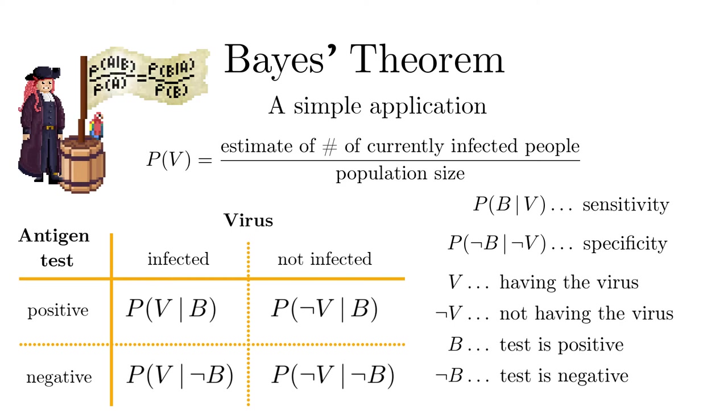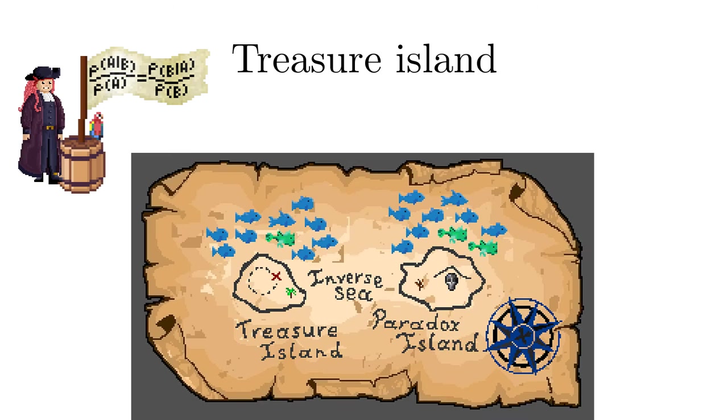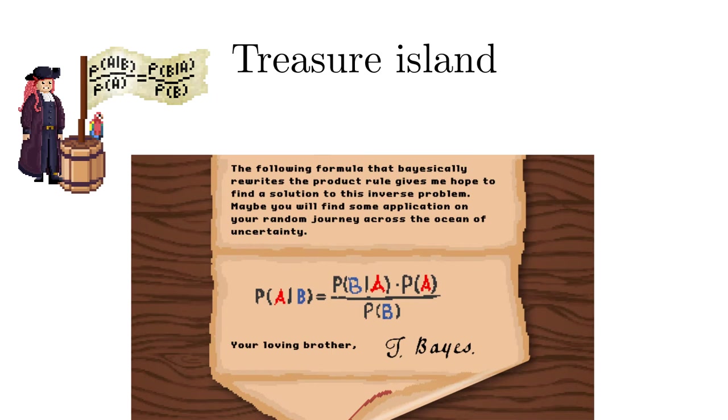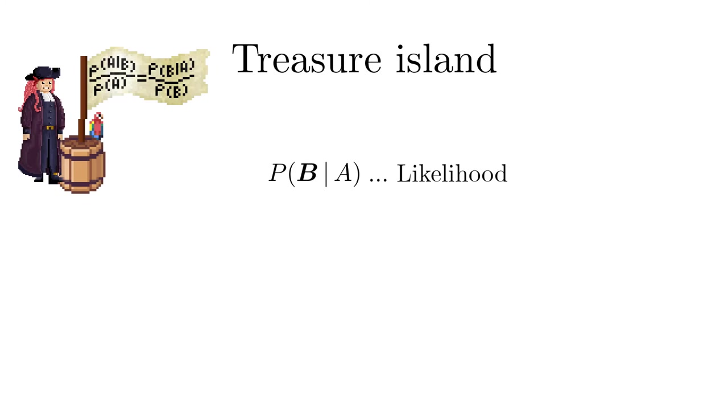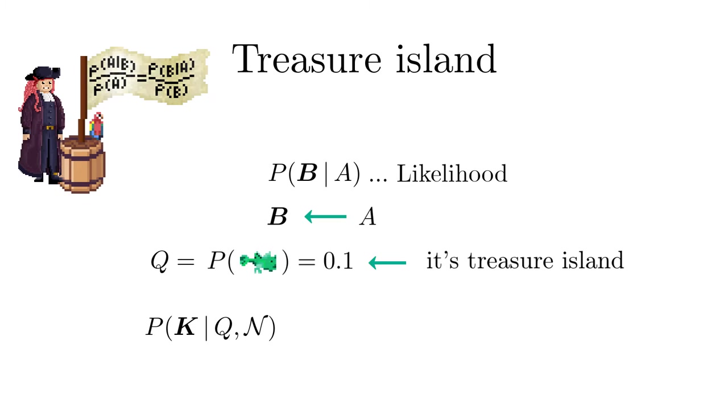Now we want to apply Bayes' theorem to the treasure island problem. Captain Bayes correctly pointed out that the draftsman of the map wanted to give us a hint with the name inverse C, because this is indeed an inverse problem. And of course, the letter of her brother Thomas Bayes has the solution to it. Why inverse? Because the likelihood corresponds in a sense to the forward problem. If we know the island, we also know the percentage of frogfish and then the likelihood of catching k frogfish is straightforwardly computed.